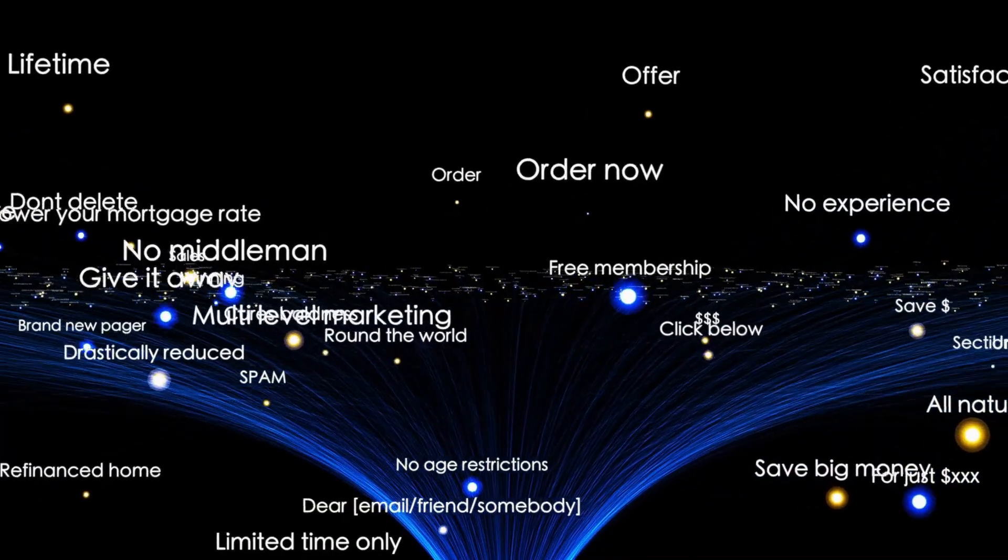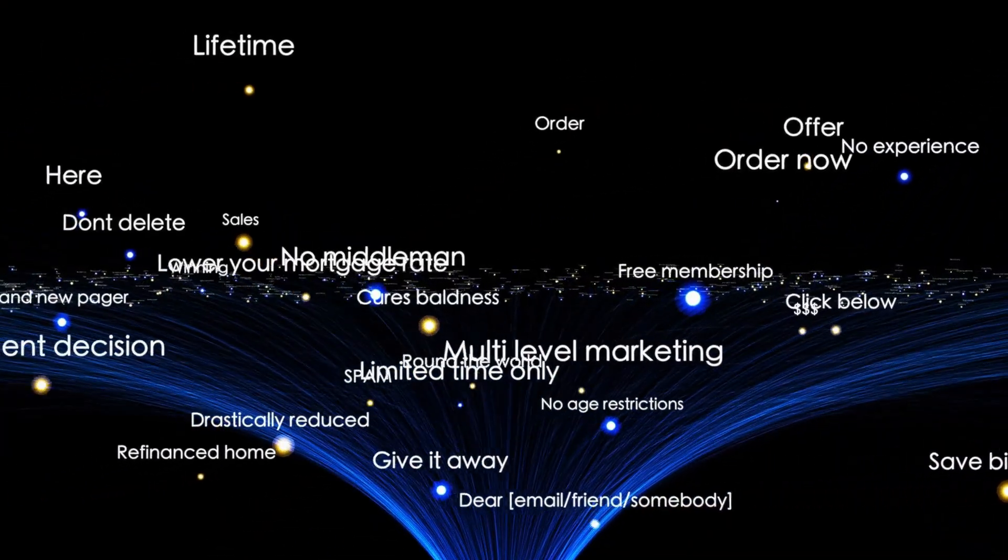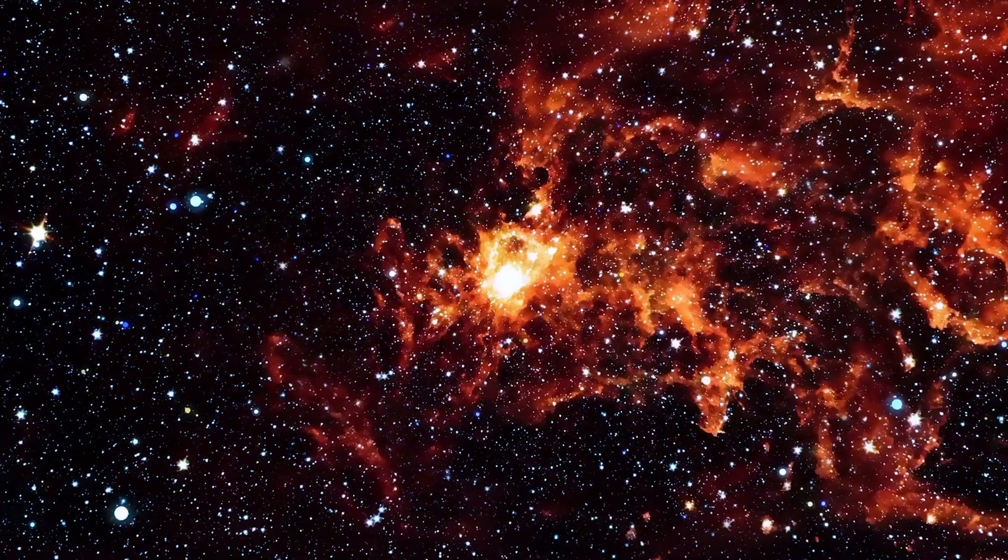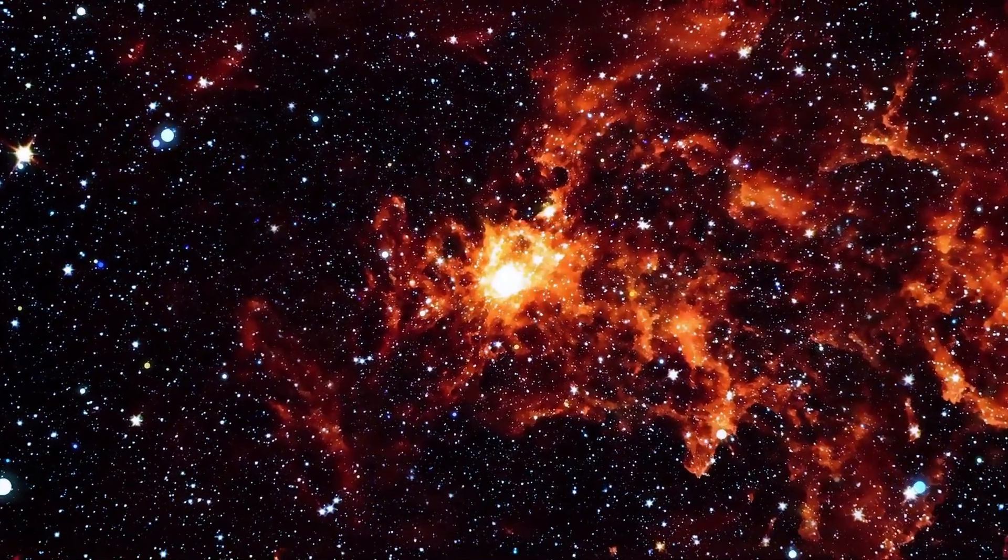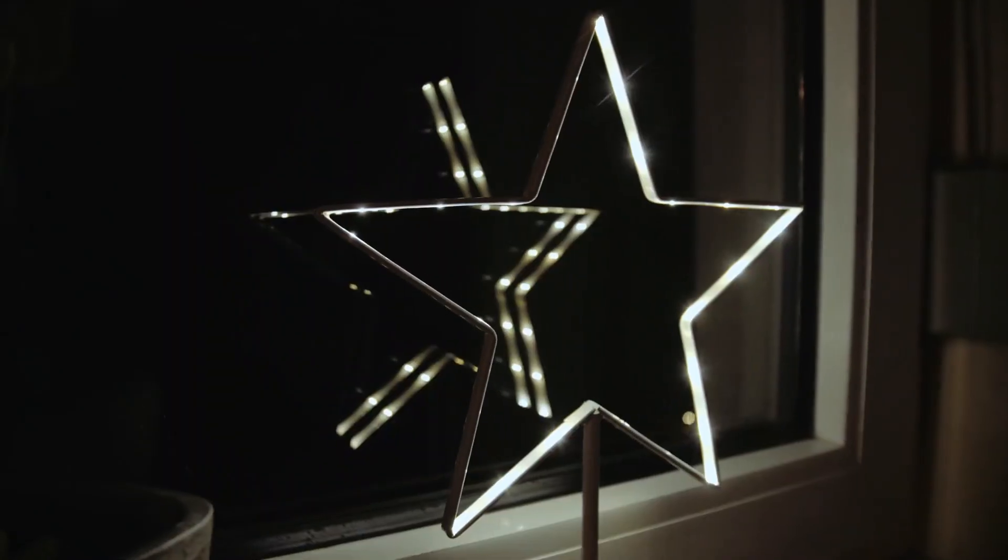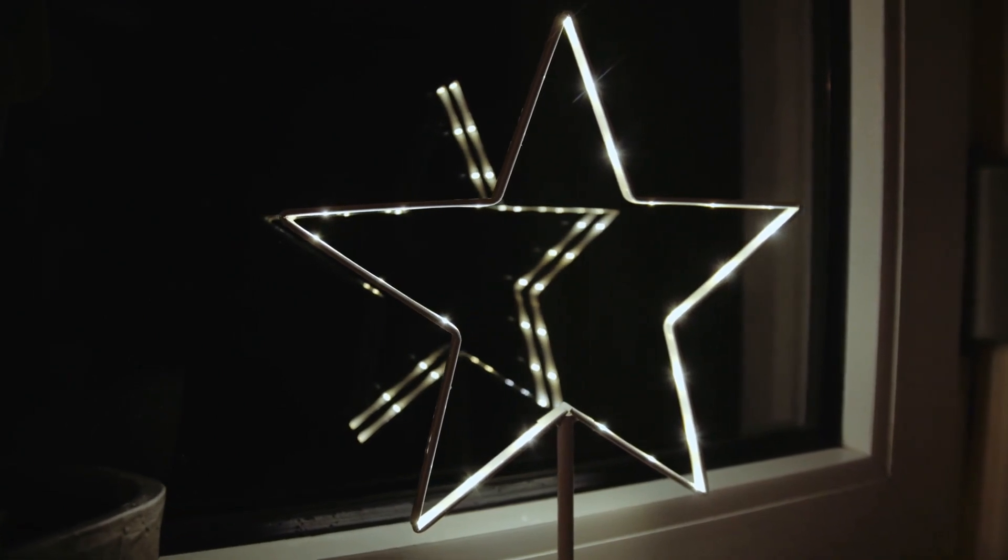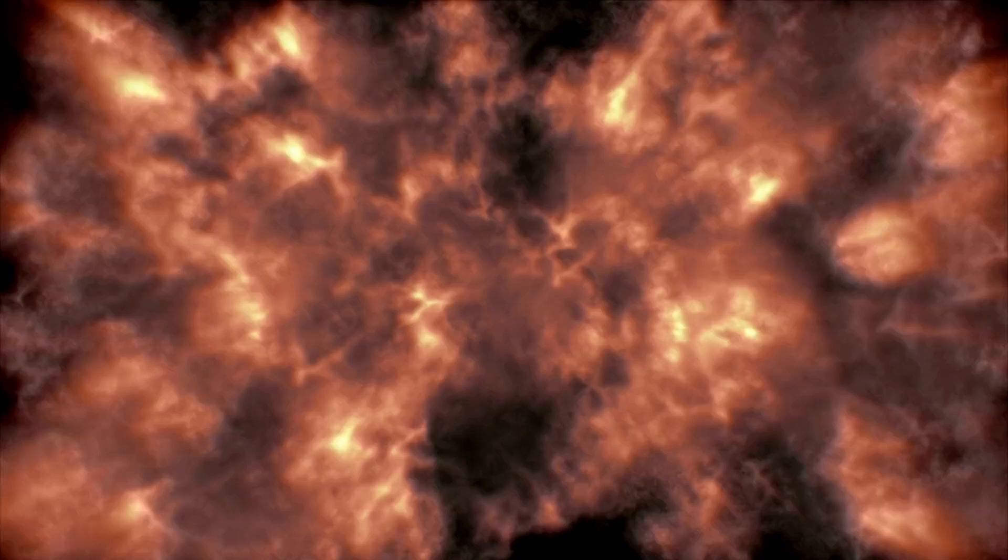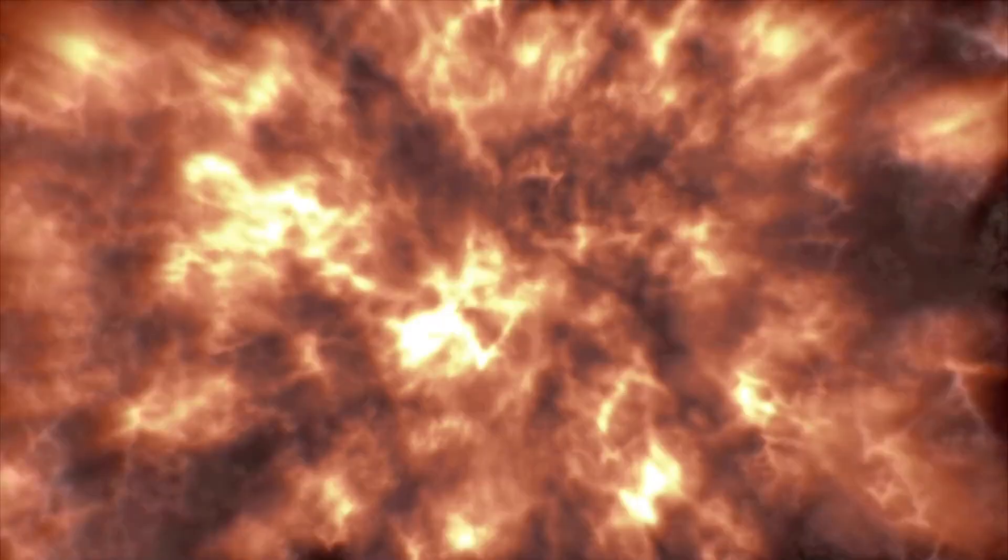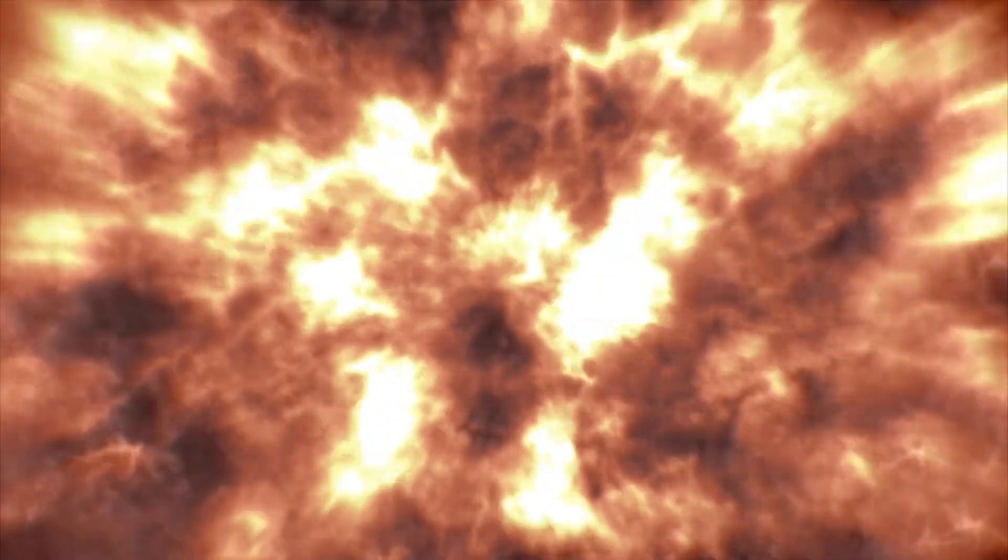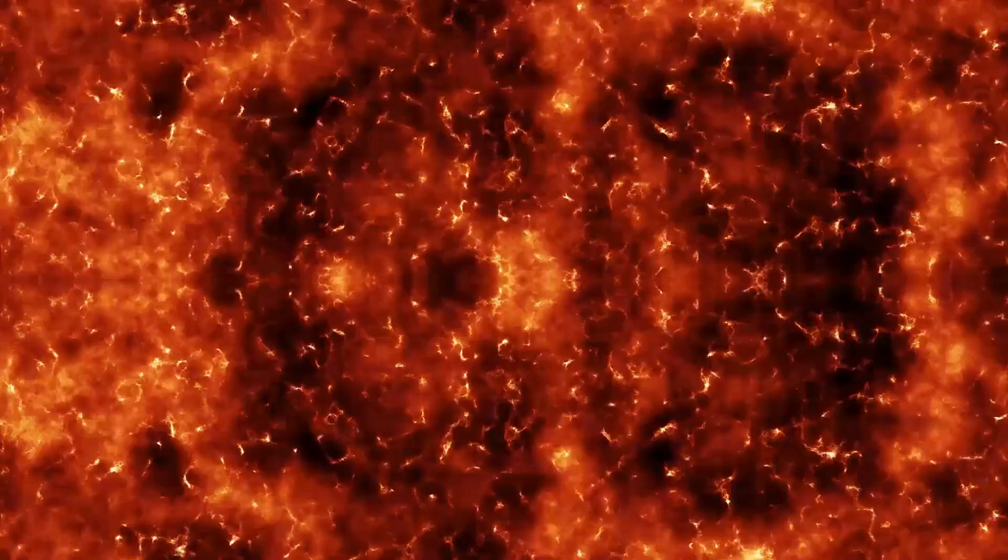Observers began to notice something strange. The star was dimming significantly. It lost about two-thirds of its usual brightness, and this dimmed state lasted for several weeks. This wasn't just a slight flicker. It was noticeable even to people with backyard telescopes, and it sparked a global conversation. Was this it? Was Betelgeuse finally on the verge of exploding?